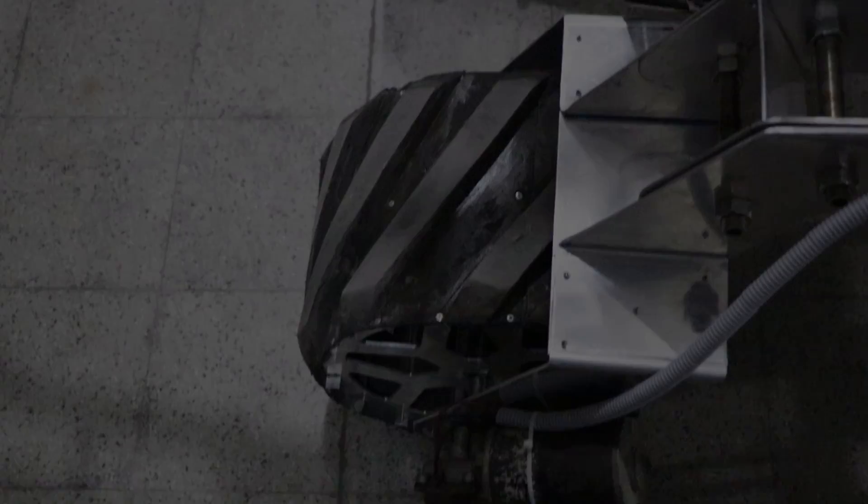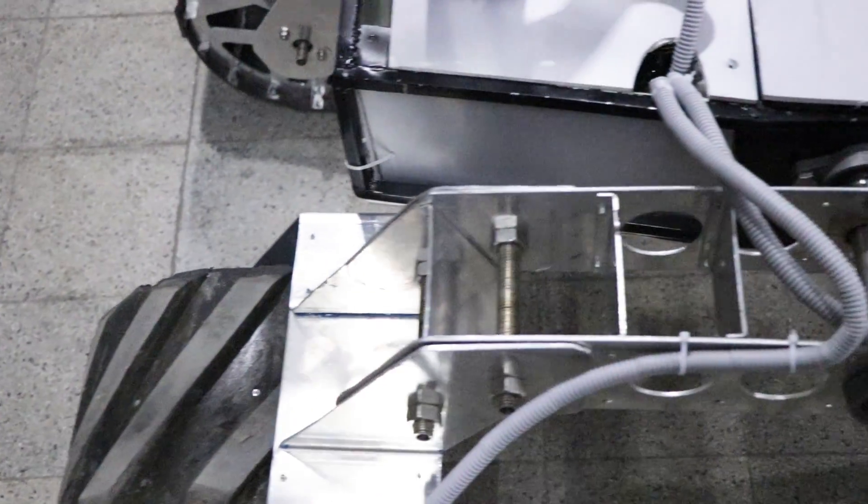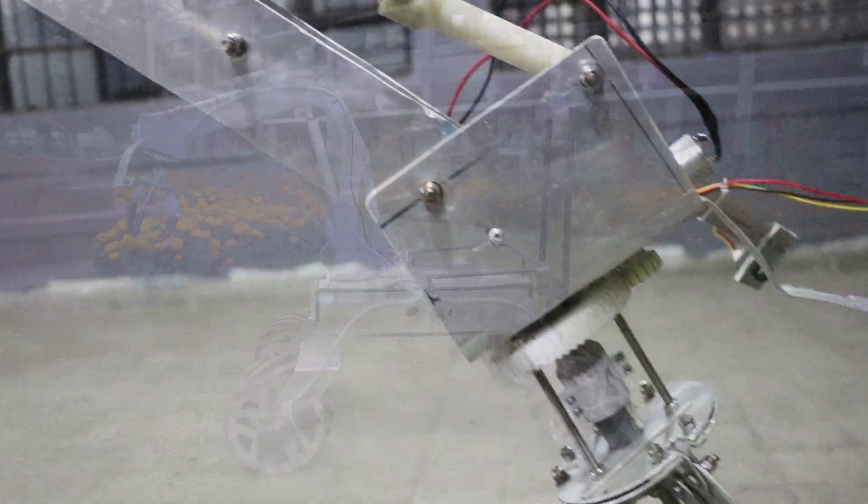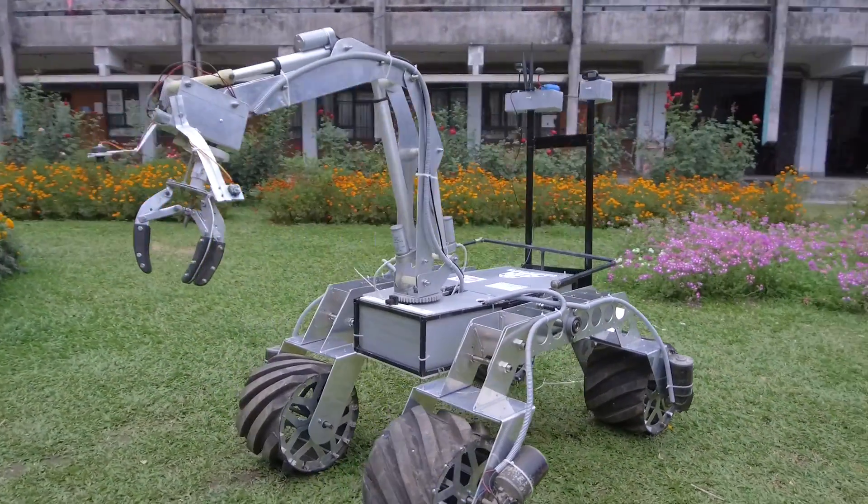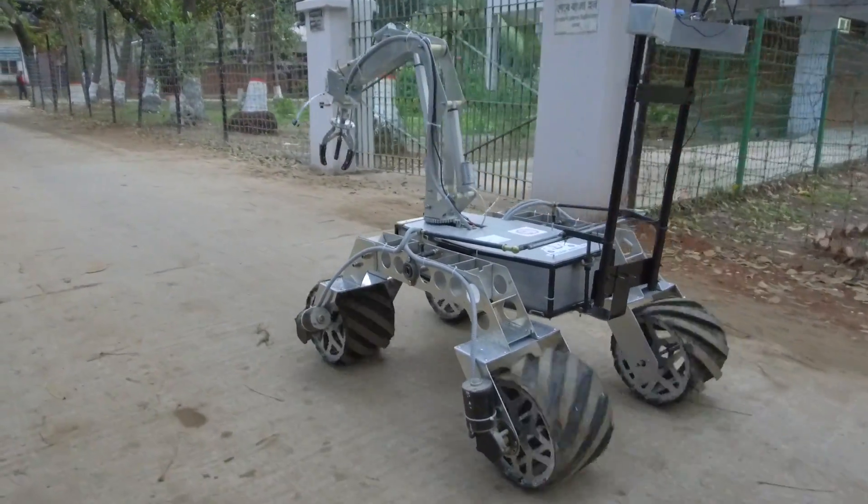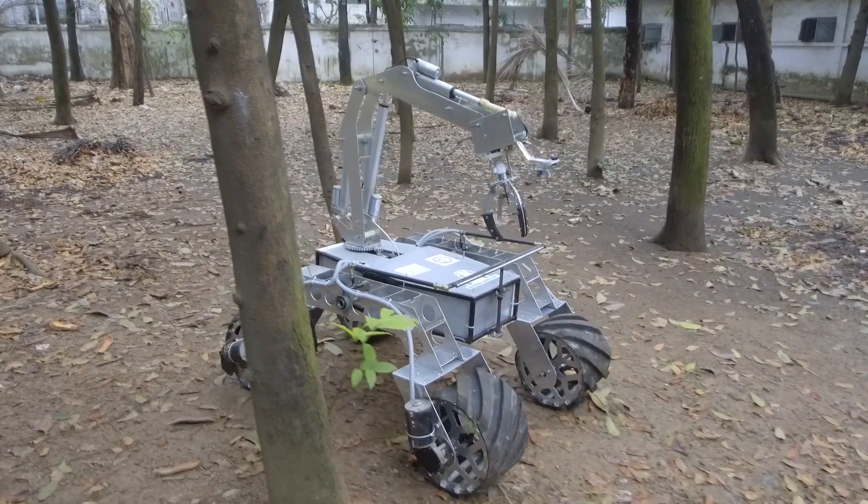This is team Interplaneter from Bangladesh University of Engineering and Technology presenting to you the latest rover of our team, Mongol E version 3. This year our team has been divided into five subgroups which are mechanical, electrical, communication, AI and science test.